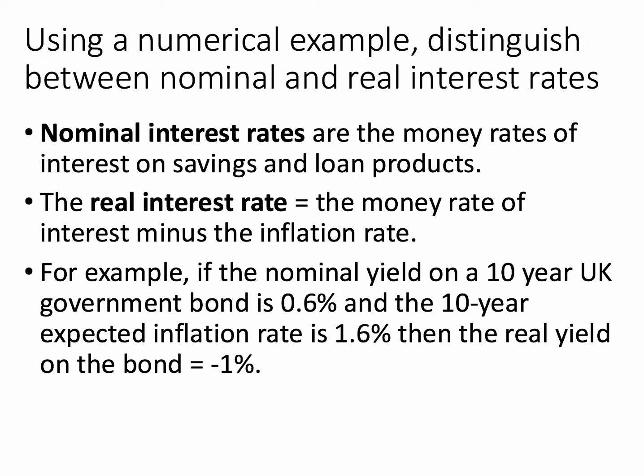The nominal interest rate — for example on a loan — is the money rate of interest on savings and loan products. The real interest rate, on the other hand, is the nominal rate of interest minus the inflation rate. For example, if the nominal interest rate or the yield on a 10-year government bond is 0.6%, and the 10-year expected inflation rate is 1.6%, people expect inflation to average 1.6% per year over the next 10 years.